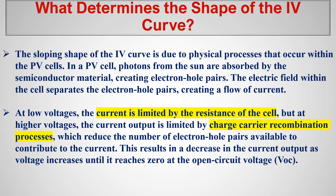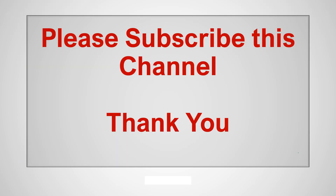What determines the shape of the IV curve? The sloping shape is due to physical processes that occur within the cell — the electron-hole pairs that are separated. At low voltage, the current is limited by the resistance of the cell. At high voltage, current is limited by the charge carrier recombination process. That is why after VMPP, there is a sudden drop and it becomes the open circuit voltage — after reaching the voltage at maximum power point, there is a sudden drop, which is a characteristic of the current and voltage output.